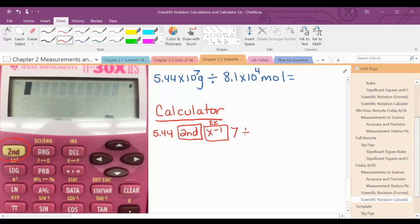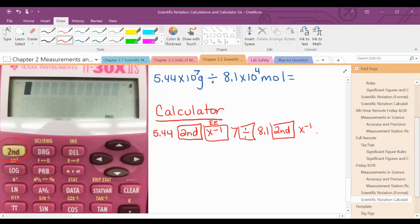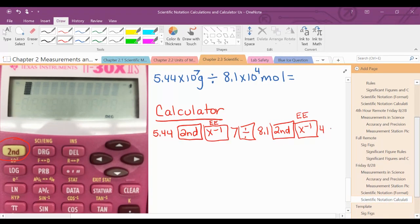divide it by 8.1 second, X to the negative 1, EE, 4, and then equals.